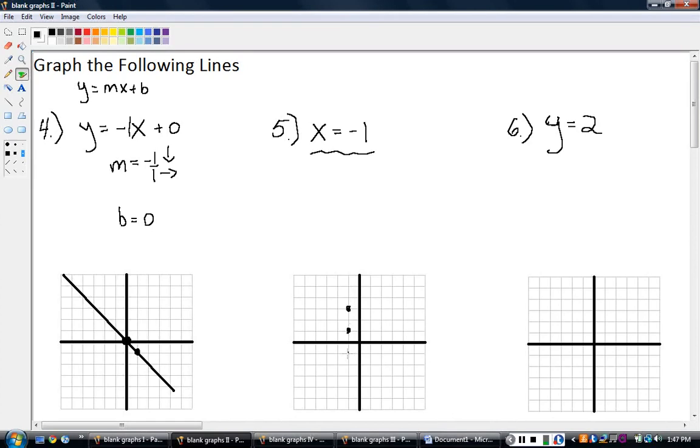So these are easy. You don't really have to do this plotting, these points like I did. I'm just trying to show you that the X value is always negative one. So basically we just draw a vertical line, like that. And that's my answer.